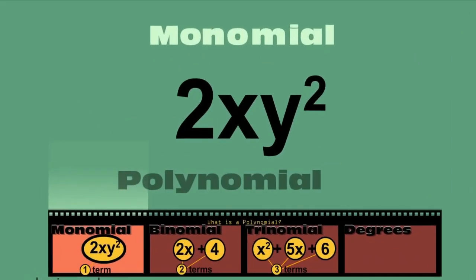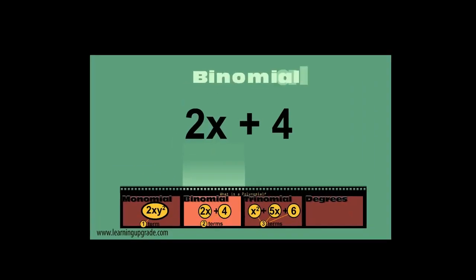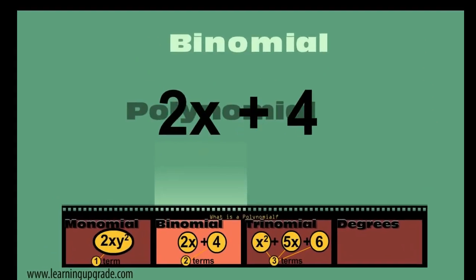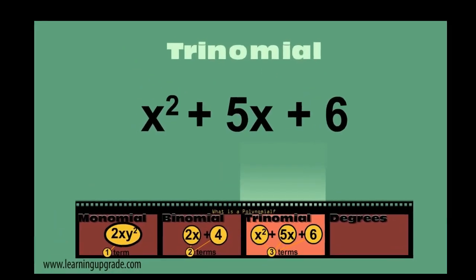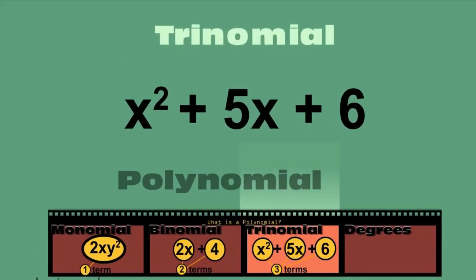An expression having only one term is called a monomial. An expression having two terms is called a binomial. An expression having more than three terms is called a polynomial.